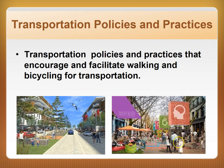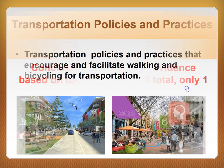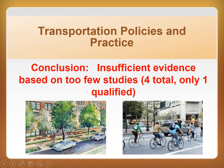Transportation policies and practices encourage and facilitate walking and bicycling for transportation. Examples include use of policy measures such as roadway design standards, expanding public transportation services, subsidizing public transportation, providing bicycle lanes and racks, and increasing the cost of parking. Currently there is sufficient evidence to support the effectiveness of transportation policies and practices, though there have been relatively few studies in this area of inquiry so far.